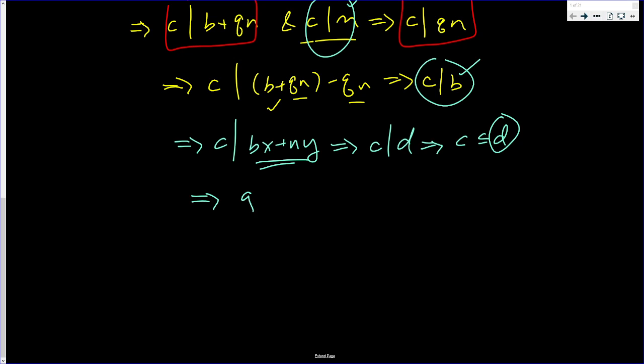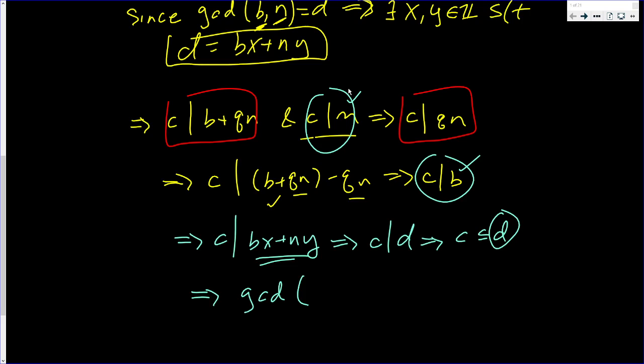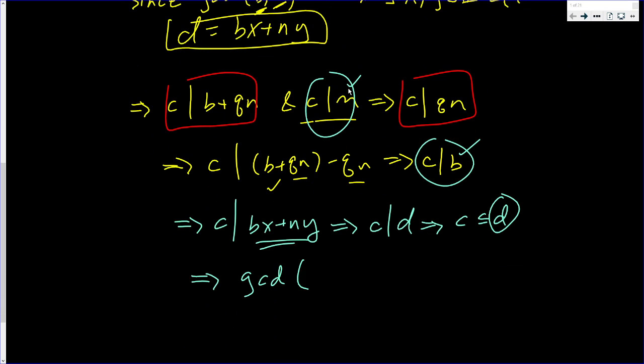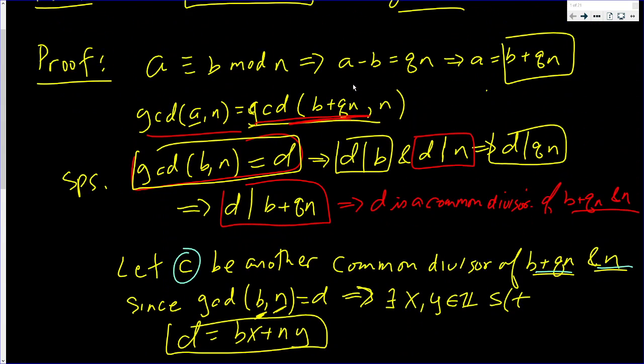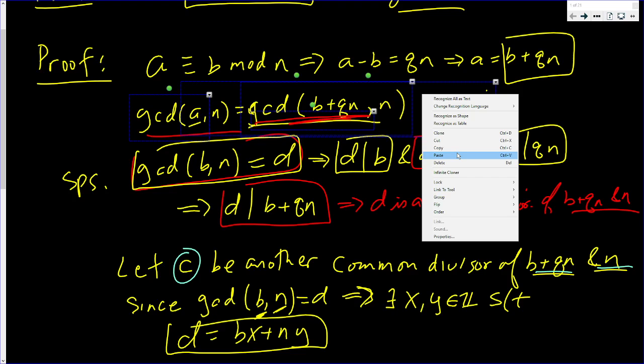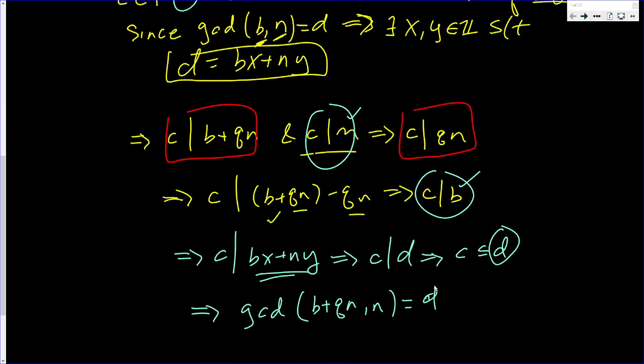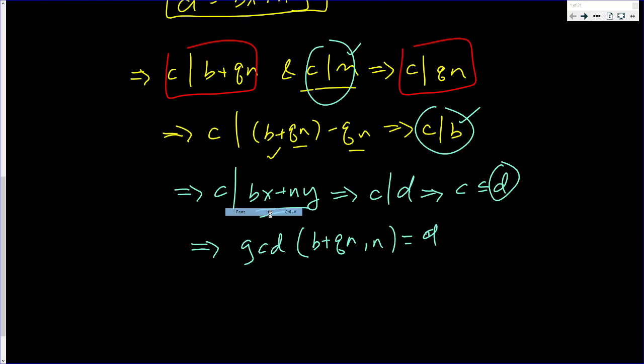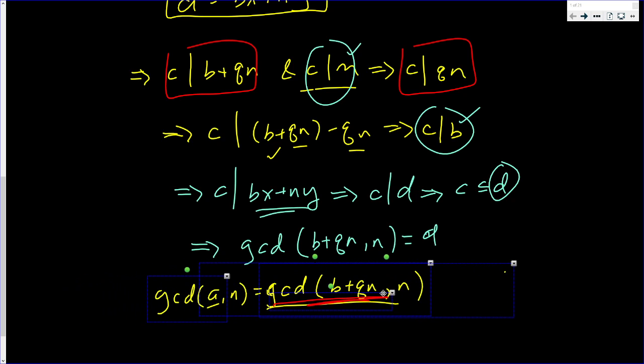So this tells me that the GCD of B plus QN and N is D. Now, let's just update something that we had up to now. We had this. Let's see if I can copy it and bring it down.